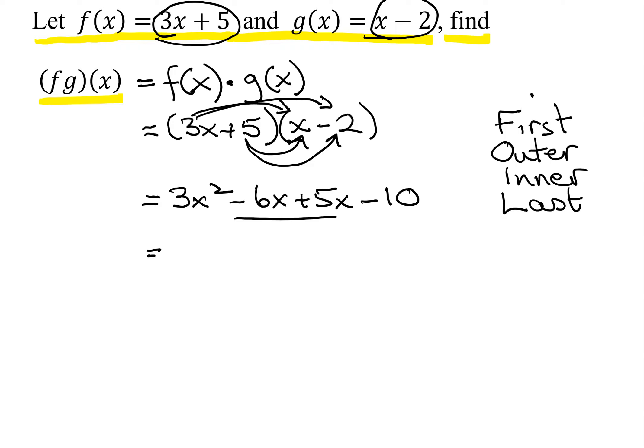And then if you notice the middle two terms are like terms, I can combine them, so I get 3x squared, negative 6x plus 5x is negative x minus 10. So that is the product function f times g of x.